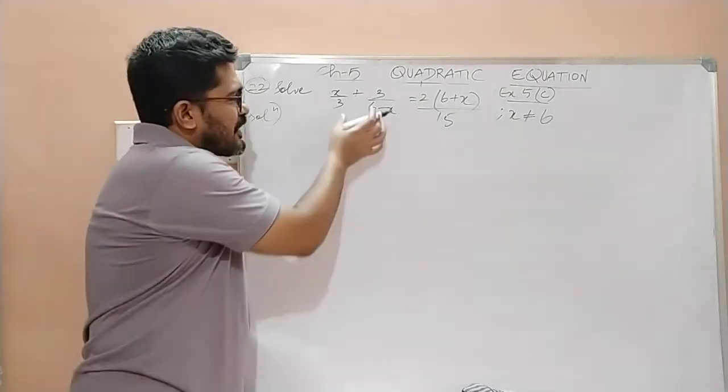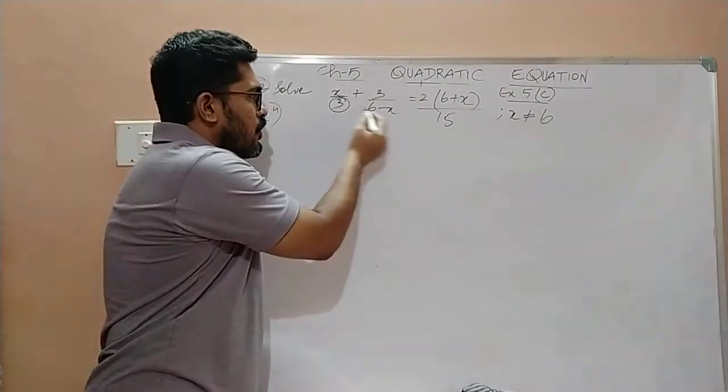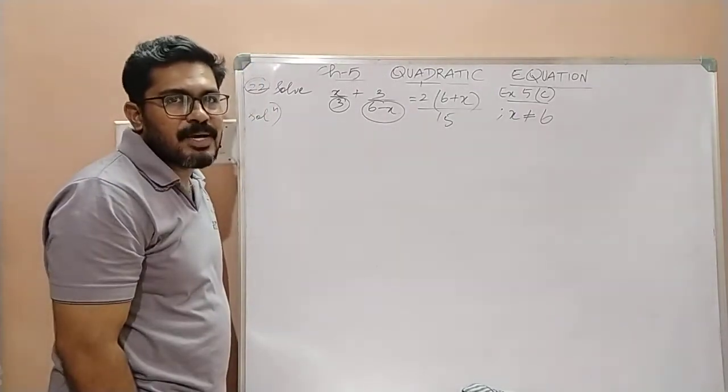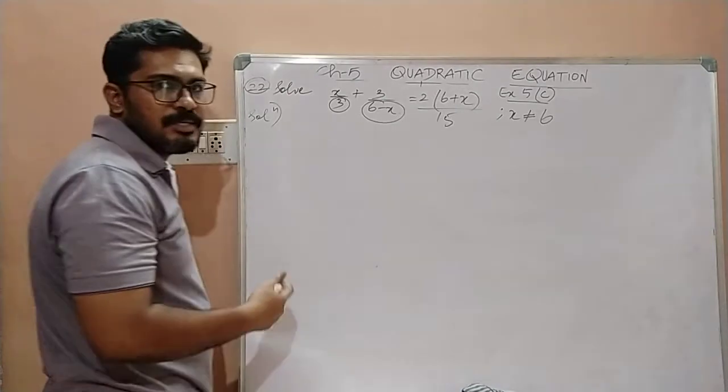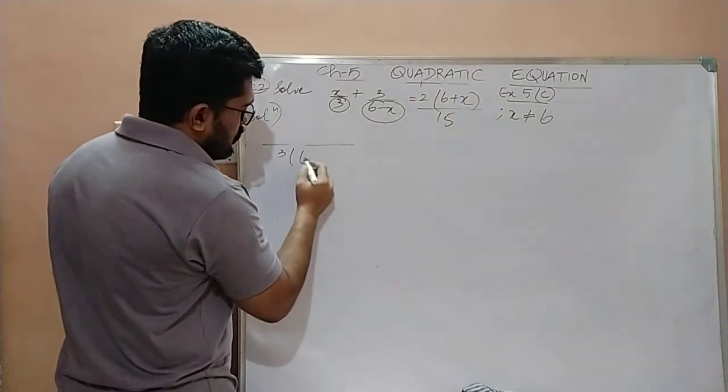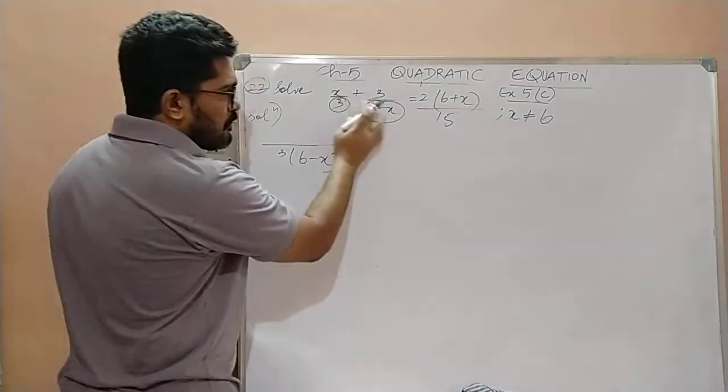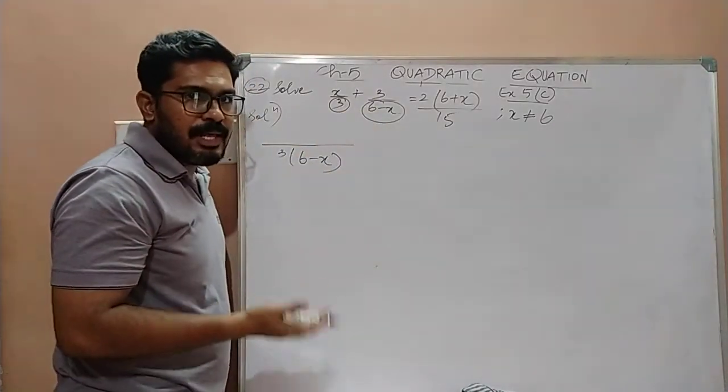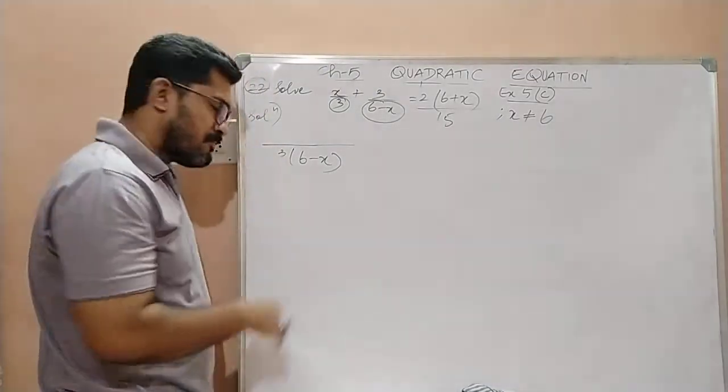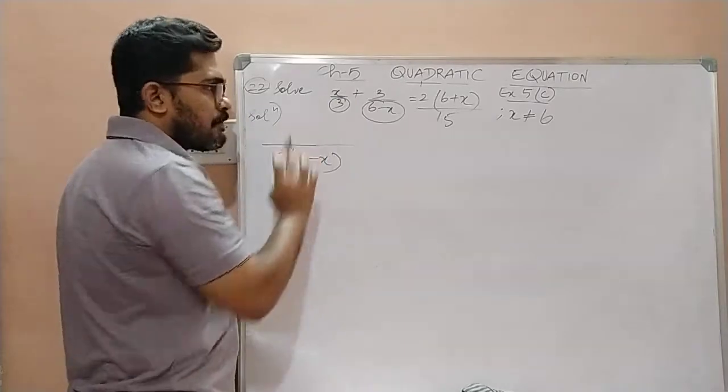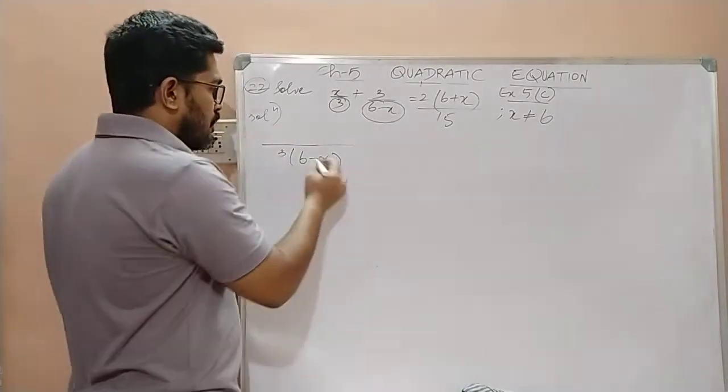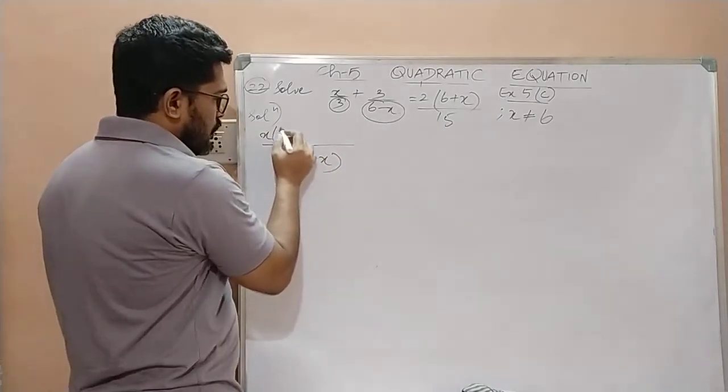Now children, on the left hand side, you are having two denominators. One is 3 and the other one is 6 minus x. What is the LCM of 3 and 6 minus x? The LCM is 3 into 6 minus x. The product of both the denominators will become the LCM. Now let us solve the usual way. 3 into 6 minus x upon 3. 3 and 3 get cancelled. What is left? 6 minus x is left. That 6 minus x will get multiplied with x.